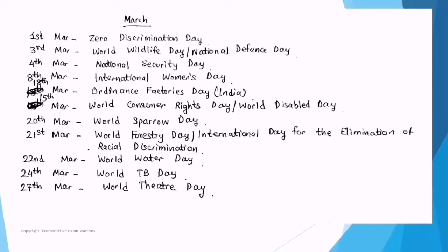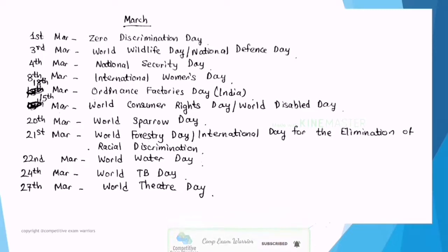March important dates: 1st March — Zero Discrimination Day. 3rd March — World Wildlife Day and National Defense Day. 4th March — National Security Day. 8th March — International Women's Day (you can tell me this year's theme in the comment section). 15th March — World Consumer Rights Day and World Disabled Day. 18th March — Ordnance Factories Day (India). 20th March — World Sparrow Day. 21st March — World Forestry Day and International Day for the Elimination of Racial Discrimination.